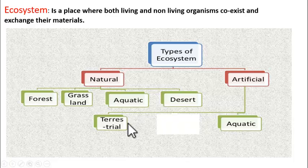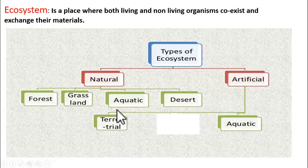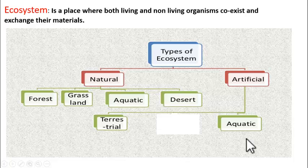Man-made terrestrial ecosystems are what? Gardens, parks — these are terrestrial ecosystems. Aquatic means aquariums. So, the aquarium that we keep in our home is also one ecosystem — that is an artificial aquatic ecosystem.